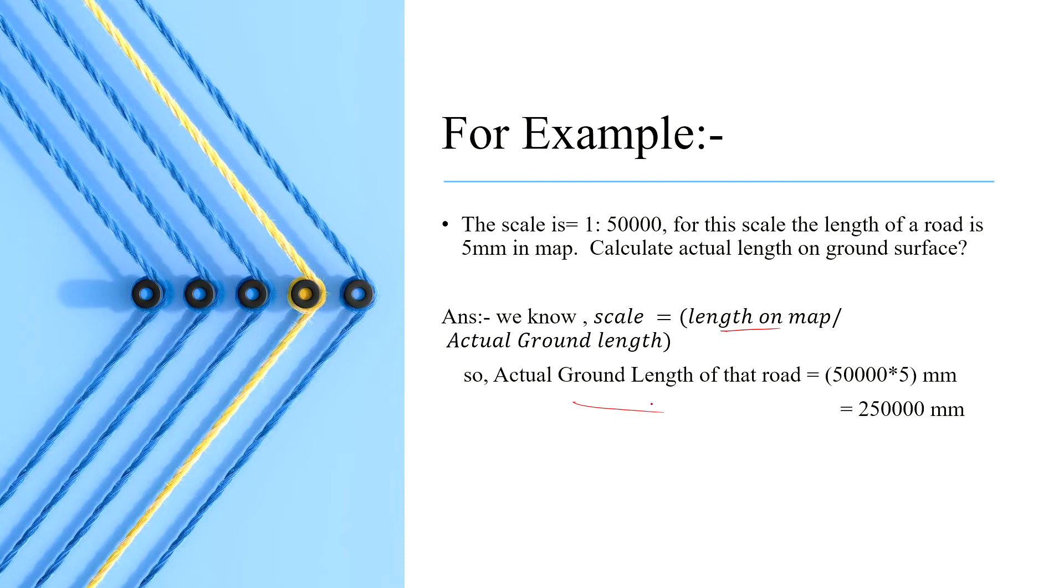So for calculating the ground length of the road, we have to multiply 50,000 with 5 mm.